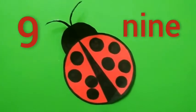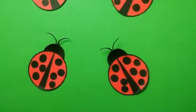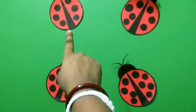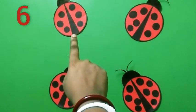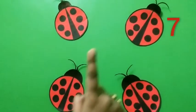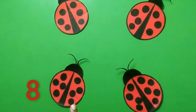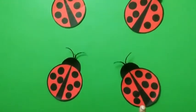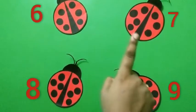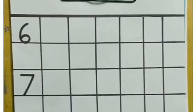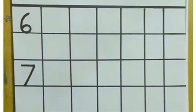So I have 4 ladybugs. This ladybug has 6 black spots, this ladybug has 7 black spots, this ladybug has 8 black spots, and this ladybug has 9 black spots. So 6, 7, 8 and 9.